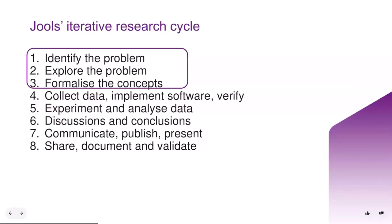My approach to the research cycle is an eight-step iterative looping kind of cycle — more or less you march through the steps, sometimes going back and then forward again. The first three steps, in which you identify the problem, explore the problem, and formalize the concepts, I think are the most relevant to developing research questions. If you are interested in knowing more about my eight-step research cycle, you can sign up for my 'Becoming a Computational Social Scientist' workshop, which happens twice a year in the UK Data Service.